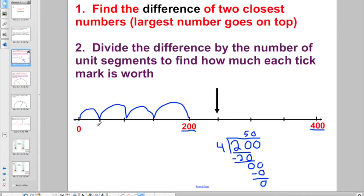Each tick mark is worth 50. So there's 50, and we're just going to count up by 50. It's now like we do in mental math, right? Another 50 is 100, and another 50 is 150. Let's go and bring it over to the other side. Plus another 50 is 200, plus another 50 is 250. So again, find the difference of the two closest numbers. Remember to put the largest number on top. Divide by the number of unit segments, and that will tell you what each tick mark is worth. That's why we practice all those counting activities.